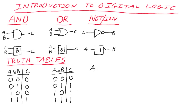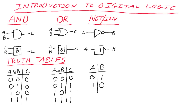Our inverter is incredibly easy too. We only have one input A and one output B — just two combinations of inputs: high or low, true or false, 1 or 0. The name once again describes the function: it inverts. So if it's a 0 on the input, you get a 1 on the output. If it's a 1 on the input, you get a 0 on the output. That simple. That's our inverter.